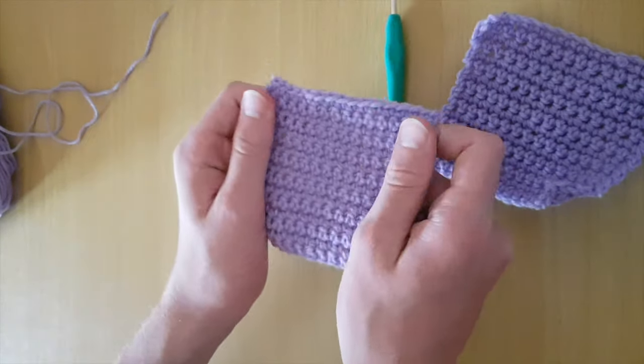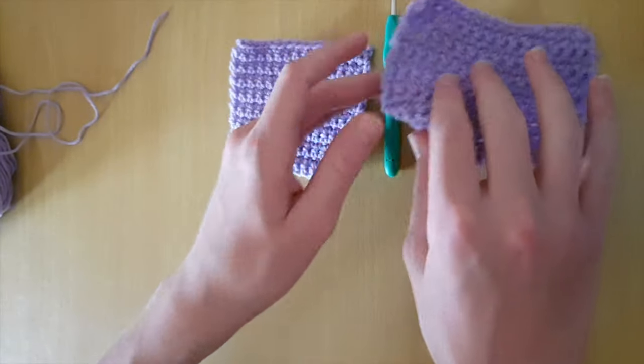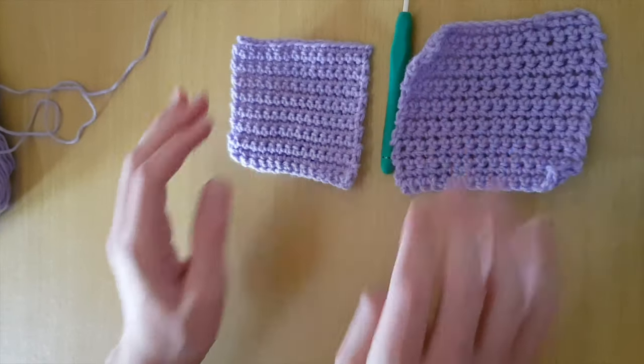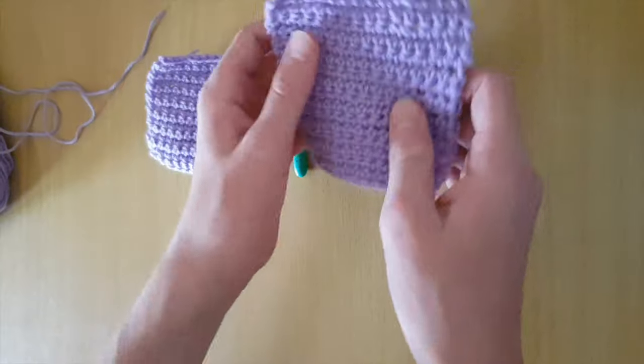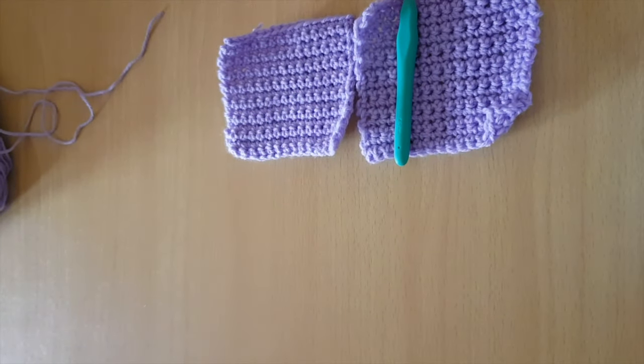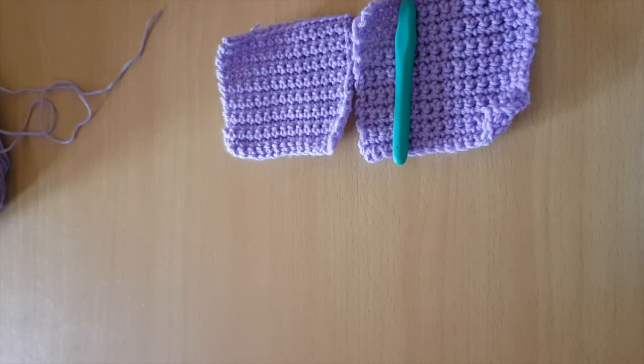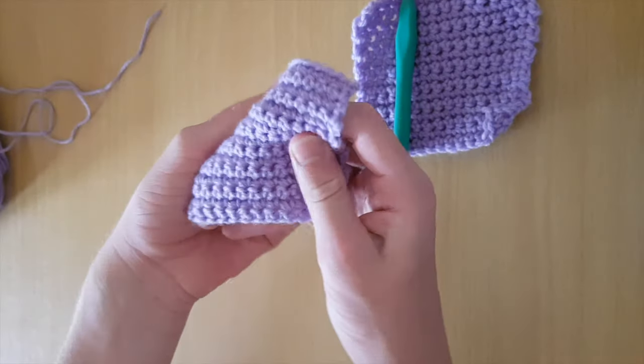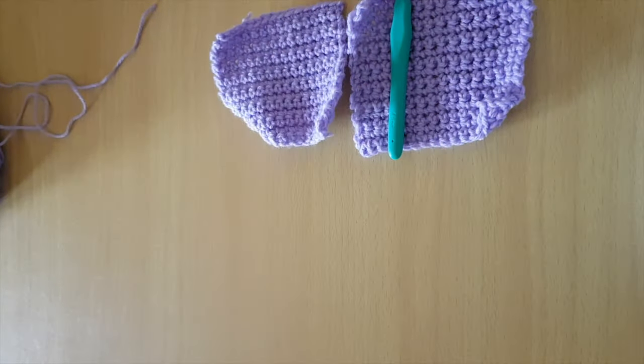As you can see, both of these fabrics are quite dense, although the one on the right is a little bit stretchier. This is just because I used a slightly bigger hook. As you can tell, both of these squares are quite dense and have very little to no holes in them. This means the stitch can be used for making toys or other projects where you need a slightly stiffer fabric, so you can also use them to make baskets or other things like that. They're also quite flexible so they can be used for a lot of different things.